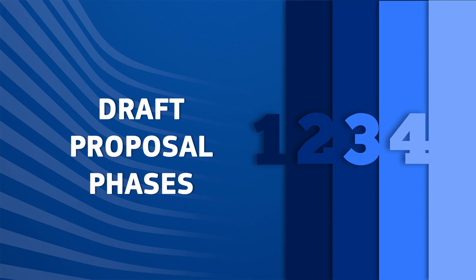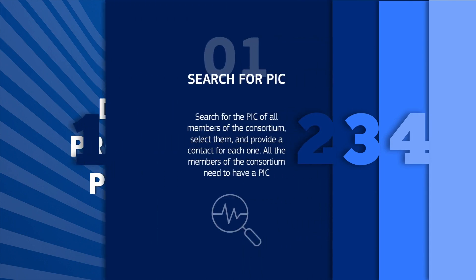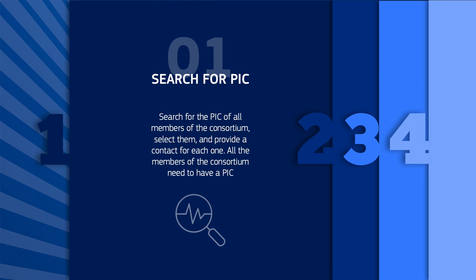To draft the proposal, you will go through different phases. Phase one: search for all members of the consortium, select them, and provide a contact for each one. All members of the consortium need to have a profile.